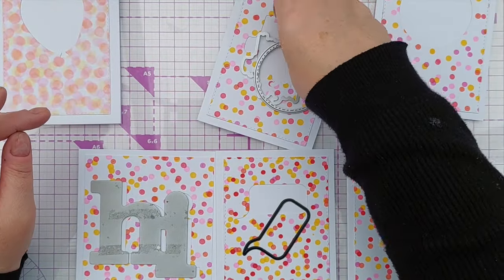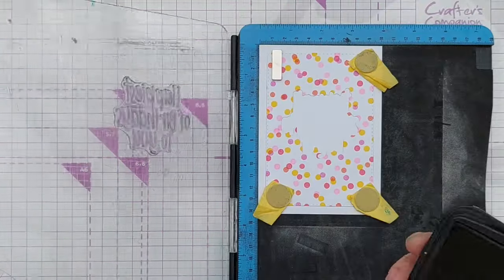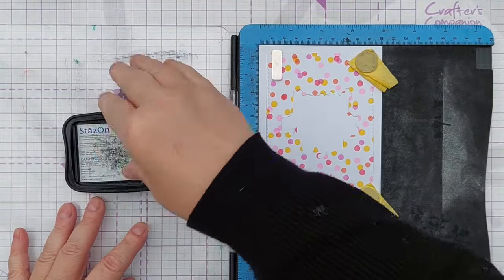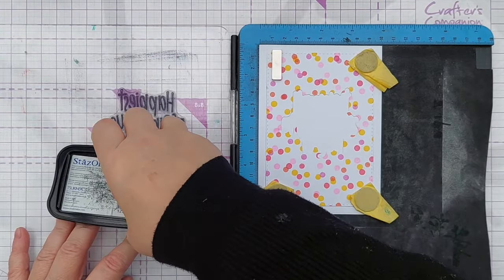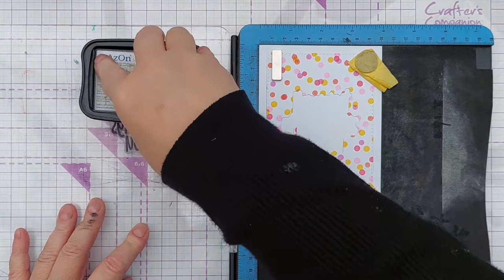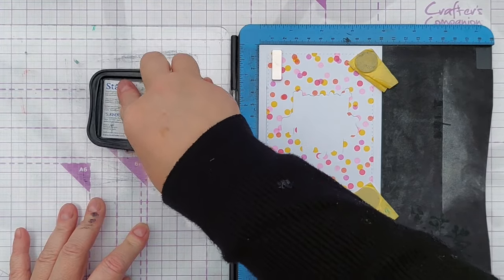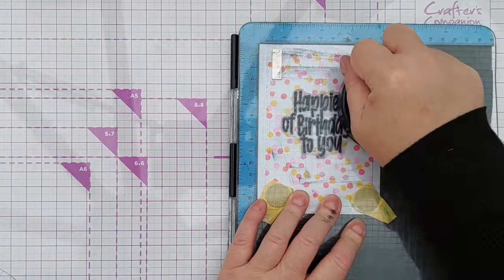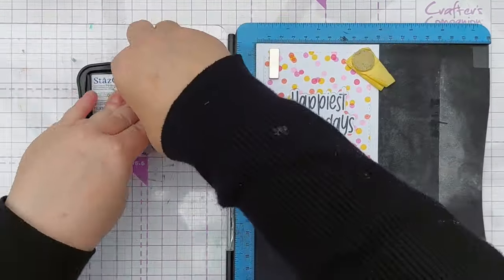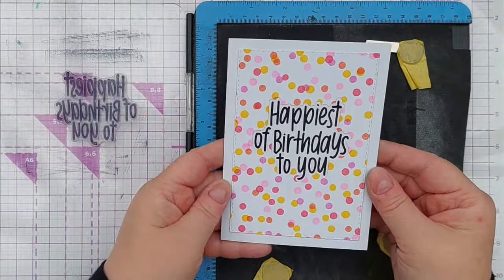So let's add some sentiments into the gaps. So this one says happiest of birthdays to you. This is a silicone stamp so I'm going to use Stazon. I've Stazoned my finger now because Stazon stamps really well with silicone stamps.